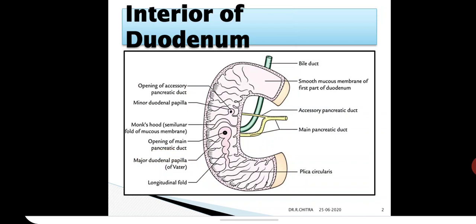Major duodenal papillae is a conical projection in the posteromedial wall of the second part. It is about 8 to 10 cm distal to the pylorus. At its summit, it has a single orifice through which the bile duct and pancreatic duct open. Sometimes they may open separately on the papilla.